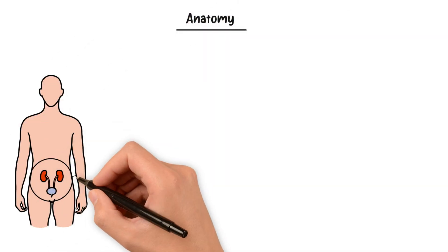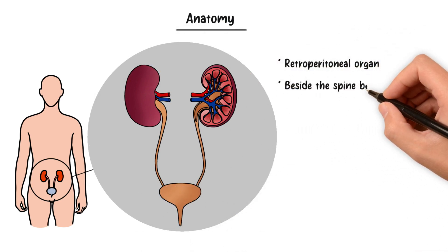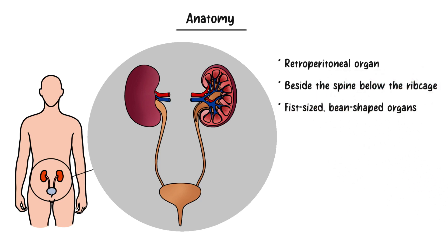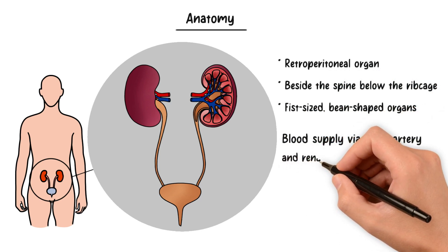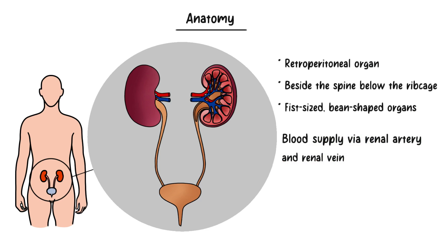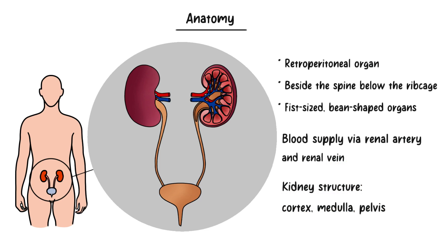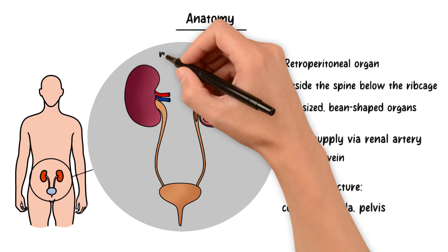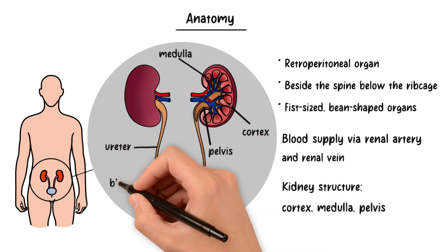Understanding kidney stones begins with the basics of kidney anatomy. Positioned retroperitoneally beside the spine below the rib cage, our kidneys are fist-sized, bean-shaped organs. They draw oxygenated blood from the renal artery, process it, and return it via the renal vein. Observing a kidney cross-section, we discern three regions: the cortex, medulla, and pelvis. The cortex, outermost, houses nephrons which start blood filtration and urine formation. The medulla contains renal pyramids to further refine the filtrate and concentrate urine. The pelvis, innermost, gathers urine from nephrons and funnels it to the ureter, leading to the bladder for excretion.